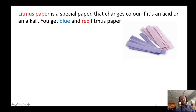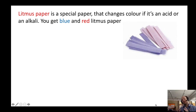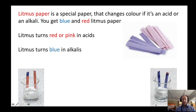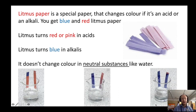How do we know if something's an acid or an alkali? Surely these things are really dangerous and you don't want to be testing them or putting them on your fingers to see if they are sour or soapy — that would be really silly. So instead, we use a special kind of paper called litmus paper, and it comes in two different kinds: blue litmus paper and red litmus paper. Litmus will turn red or pink in acids, it will turn blue in alkalis or bases, and it doesn't change color in neutral substances like water.